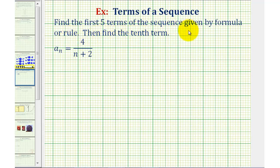We want to find the first five terms of the sequence given by the sequence formula or sequence rule, and then also find the tenth term. So if we're given a sequence formula, as we are here,